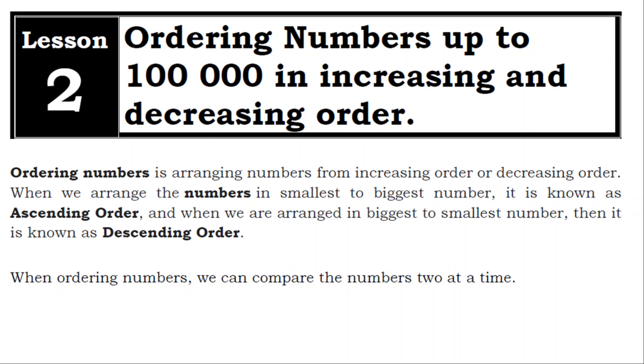Ordering numbers is arranging numbers from increasing order or decreasing order. When we arrange the numbers in smallest to biggest number, it is known as ascending order, and when we are arranged in biggest to smallest number, then it is known as descending order.